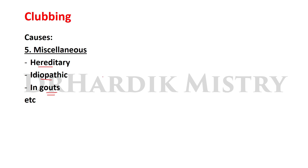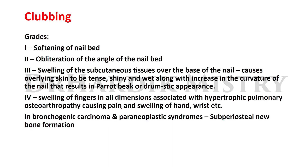Miscellaneous causes of clubbing include hereditary, idiopathic, and gout. We have now covered all causes of clubbing: pulmonary, cardiac, alimentary, endocrine, and miscellaneous. There are four grades of clubbing — Grade 1, Grade 2, Grade 3, and Grade 4.